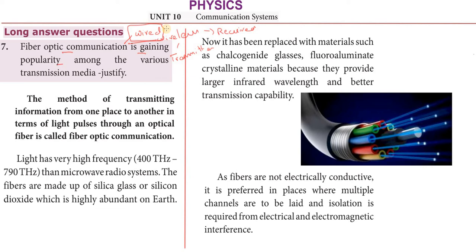Why is Fiber Optic Communication gaining so much popularity? Optical fiber cable has a lot of bandwidth, so we can increase the data transfer rate. We now have internet connections up to 10 Gbps. When you use optical fiber in a city or rural areas, you can achieve up to 10 Gbps connection speeds.